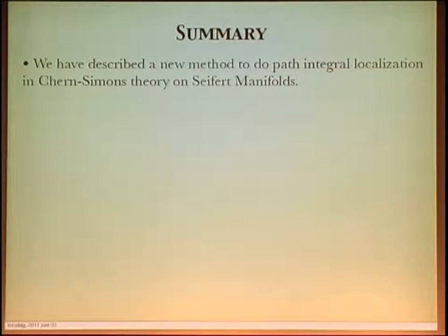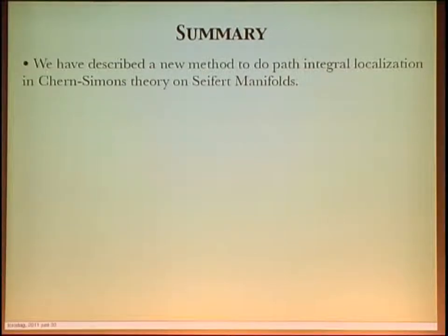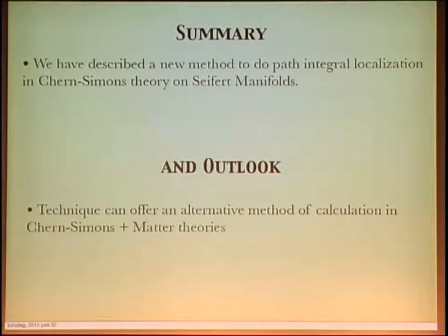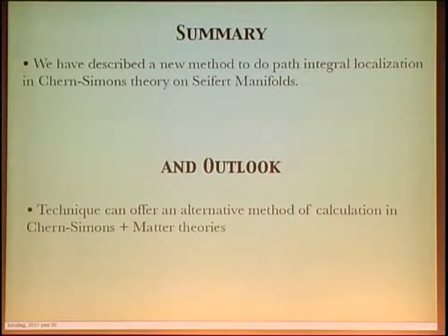Summary: I described a new way to do path integral localization of Chern-Simons theory on Seifert manifolds, using introduction of auxiliary fields and an odd symmetry, obtained by twisting the method introduced by Kapustin, Willett, and Jafferis on S^3. Staying on S^3, this twisting is basically a change of variables that technically simplifies the localization computation, and may offer an alternative, more efficient method for calculations in other three-dimensional gauge theories such as Chern-Simons-matter theories.